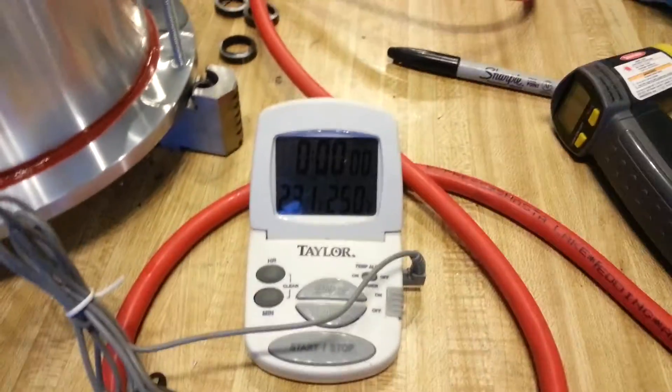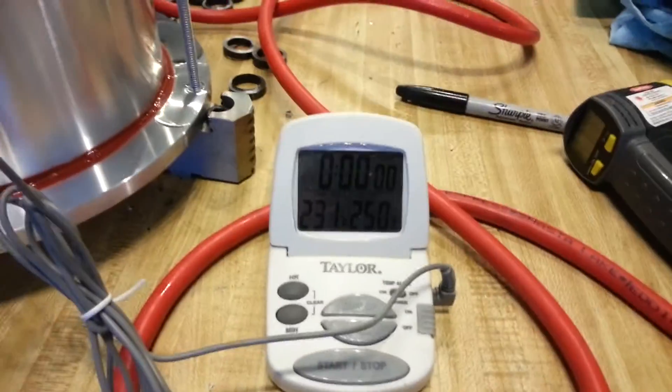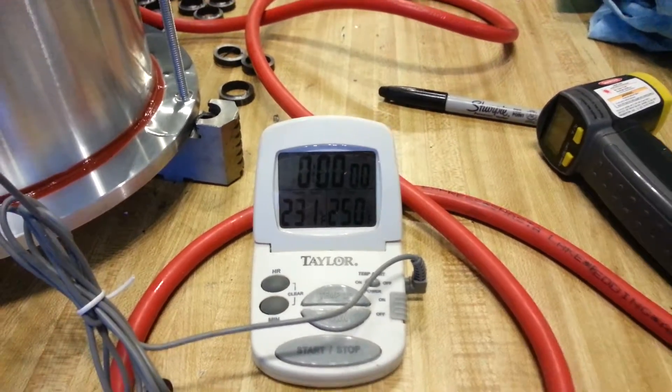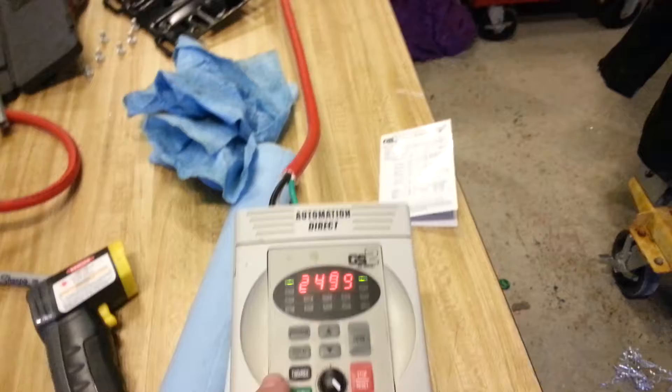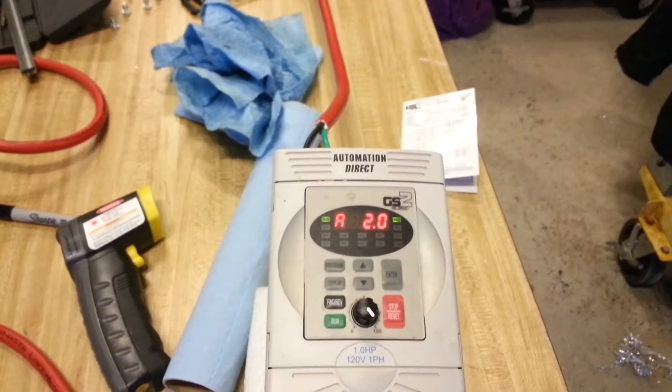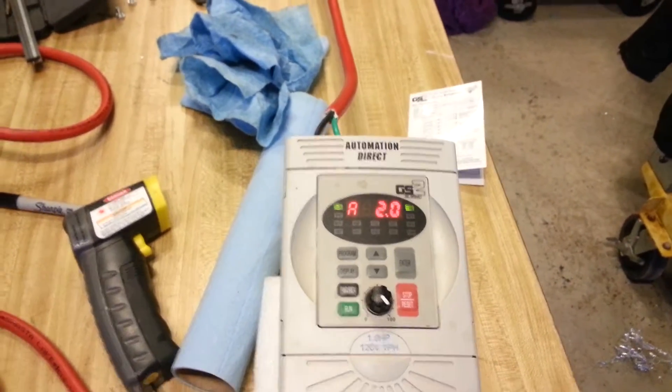Right now I'm at 231 degrees if you can see that, and running at 2500 RPM. Amps are right around 2.1.